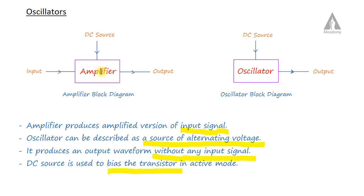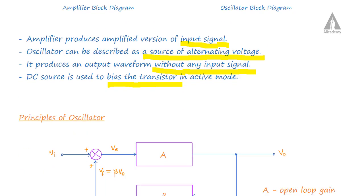Another major difference is that amplifiers use negative feedback, whereas oscillators use positive feedback. Positive feedback is used in oscillators — this is an important difference.